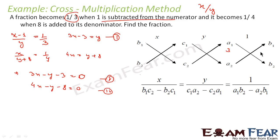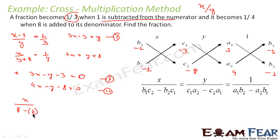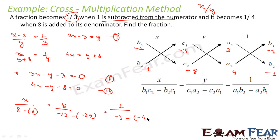Now I have two equations. I can use cross multiplication. So a1 is 3, b1 is minus 1, c1 is minus 3, a2 is 4, b2 is minus 1, c2 is minus 8. Applying the cross multiplication formula, we get x by 5 is equal to y by 12 is equal to 1.